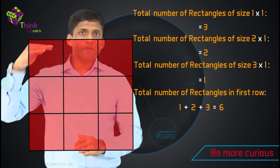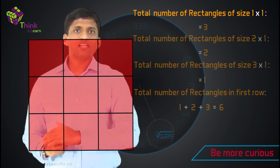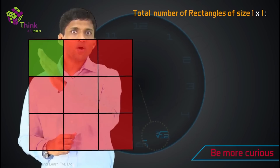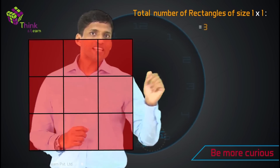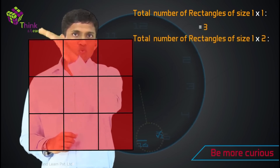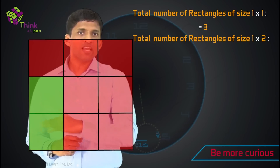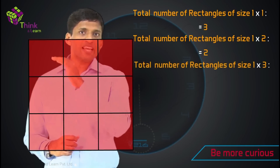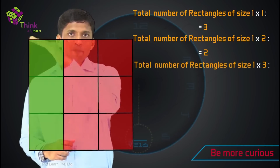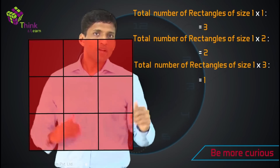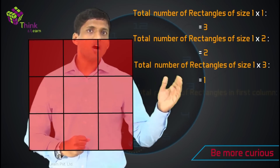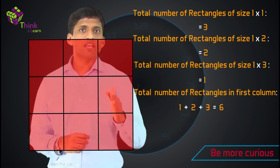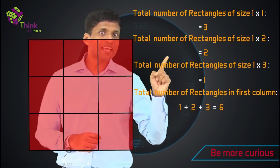Now take the first column and how many rectangles are there? Here also if we count: of size 1 by 1, it's 1, 2, 3. Of size 1 by 2, it's 1 and 2 — so there are 2 of them. How many rectangles are there of size 1 by 3? It's the complete column, so that's 1. So along this first column also, the total number of rectangles is still 1 plus 2 plus 3 equal to 6, which is again a triangular number.